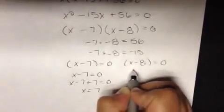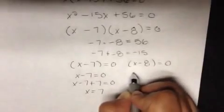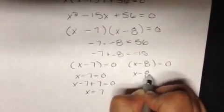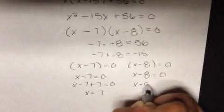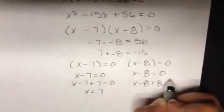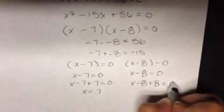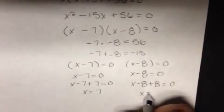Then I will do the same thing for x minus 8. I will take x minus 8 plus 8 equals 0 plus 8 to cancel out the 8 on the left side, so x equals 8.